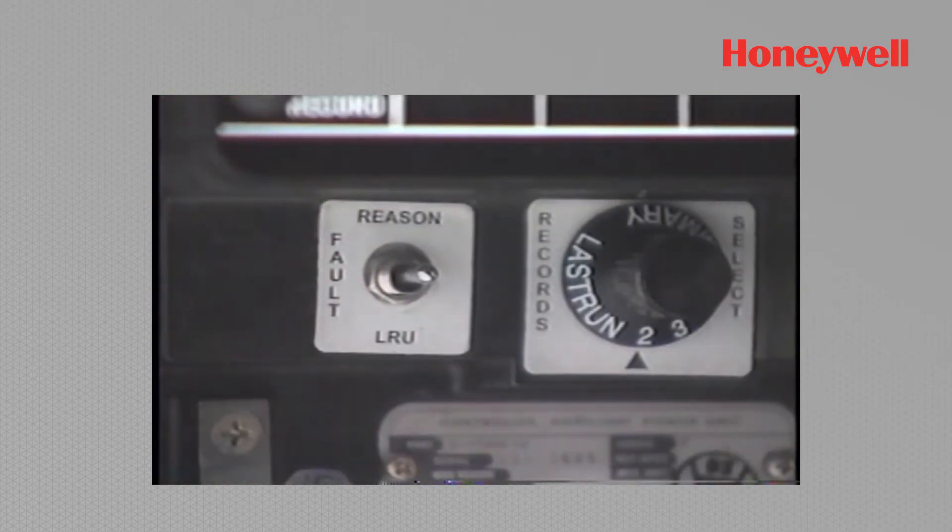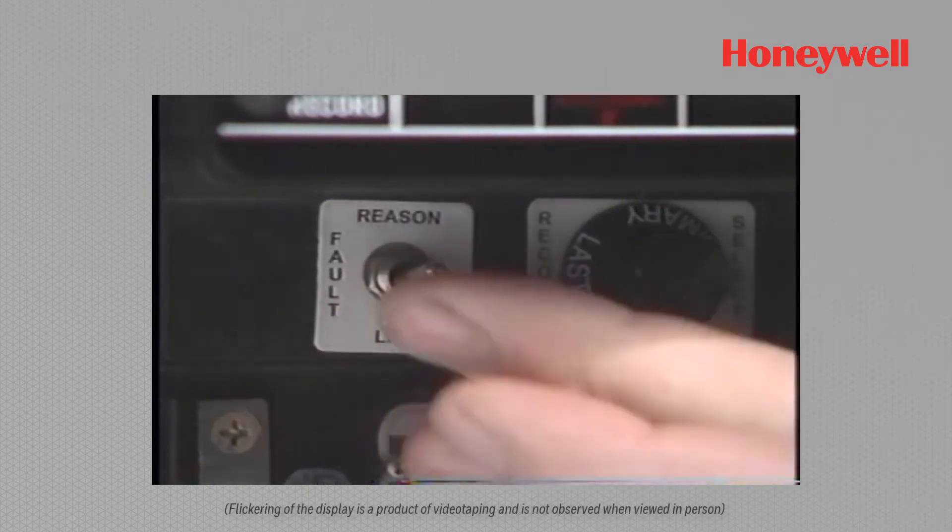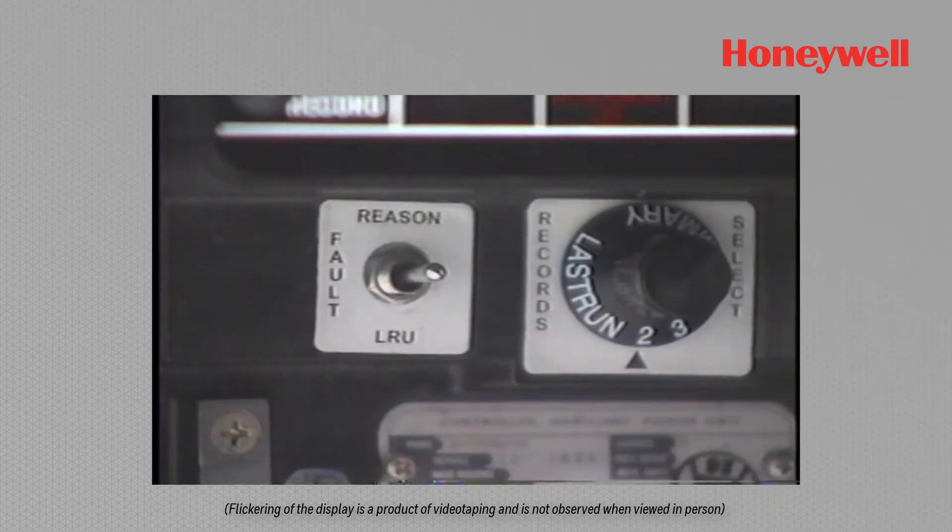In the lower left-hand corner, the fault switch is a two-position toggle switch that displays either fault reason in the up position or fault LRU in the down position.